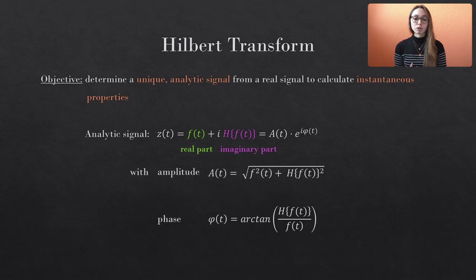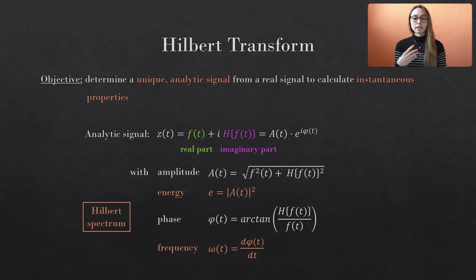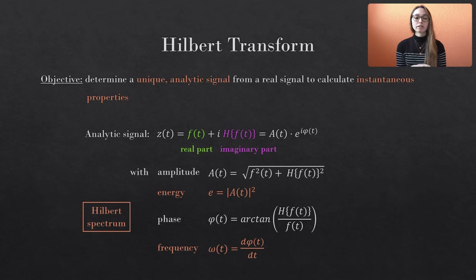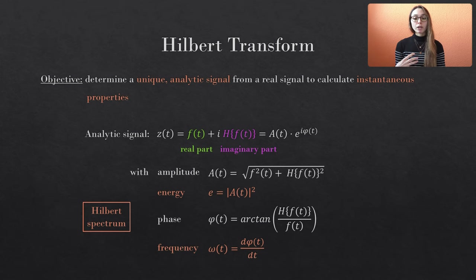Both are time-dependent quantities, which is why they are called instantaneous properties. To calculate the Hilbert spectrum, we need the instantaneous energy and the instantaneous frequency. We obtain the energy by squaring the amplitude, and the frequency as the temporal derivative of the phase. In combination with the time steps, we can then display the Hilbert spectrum.